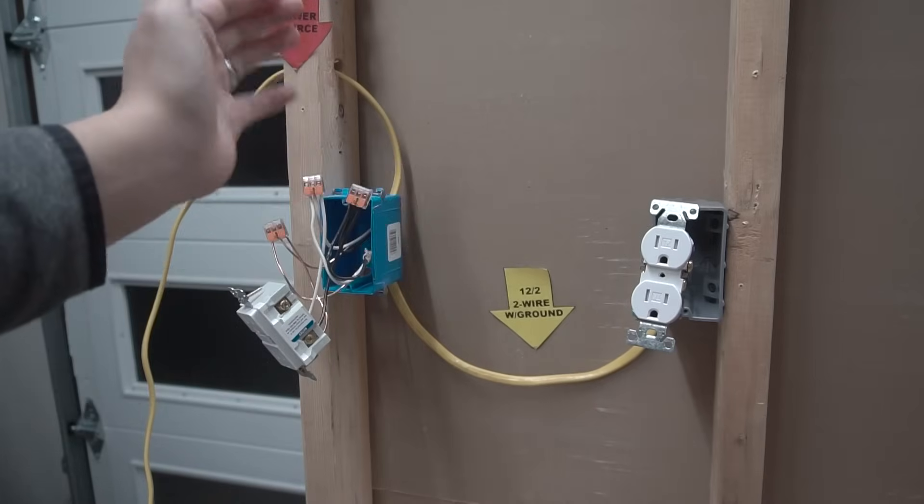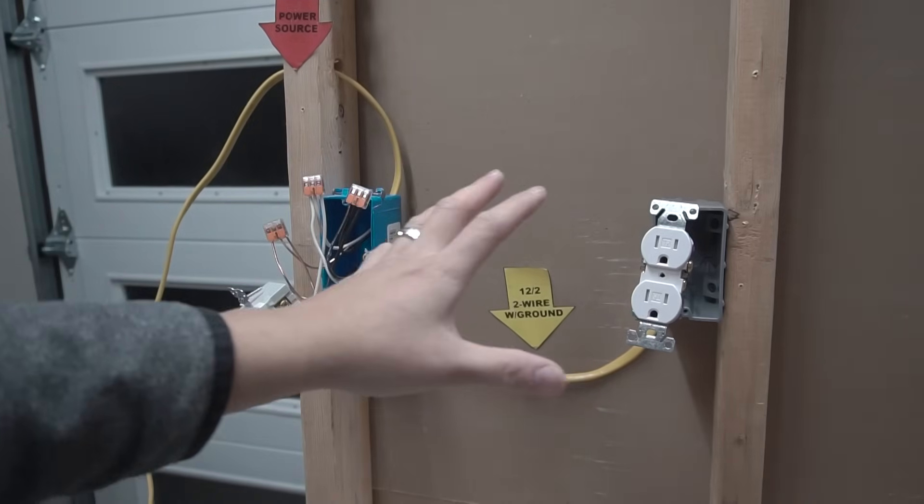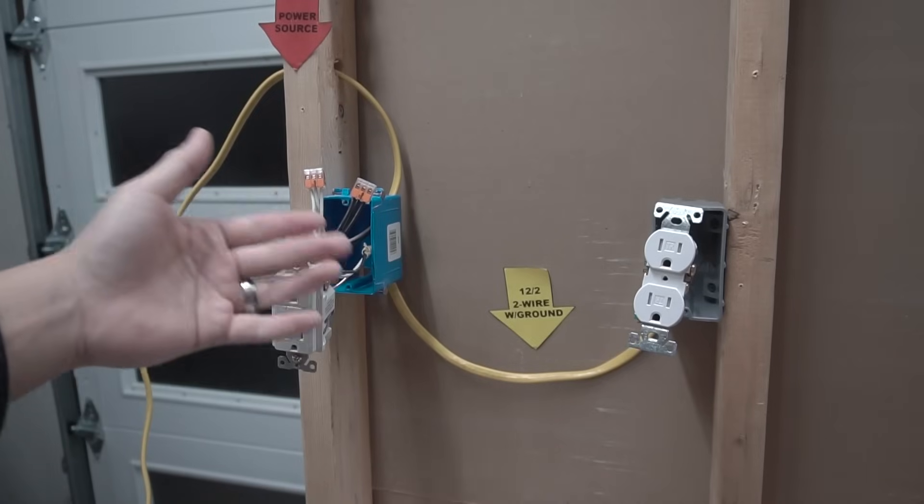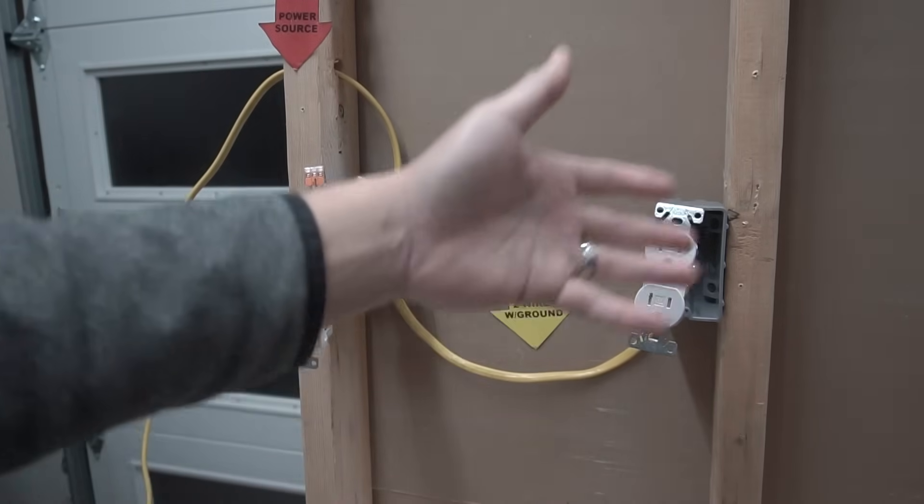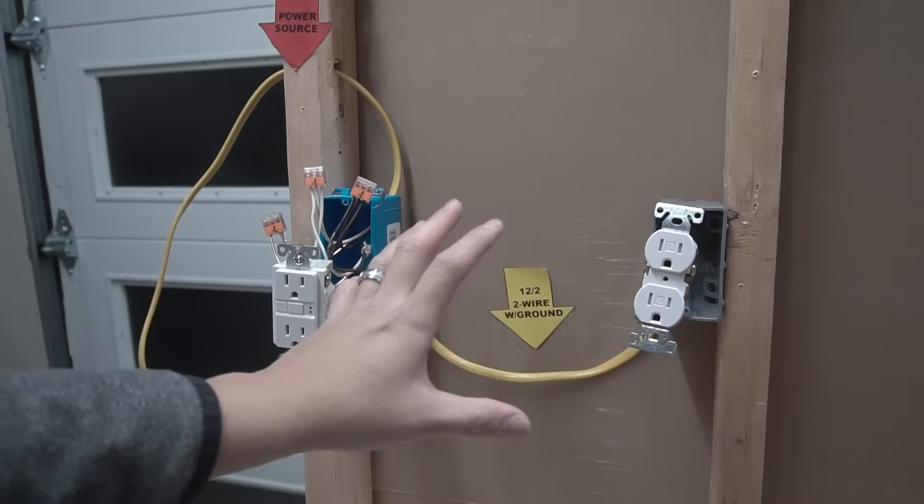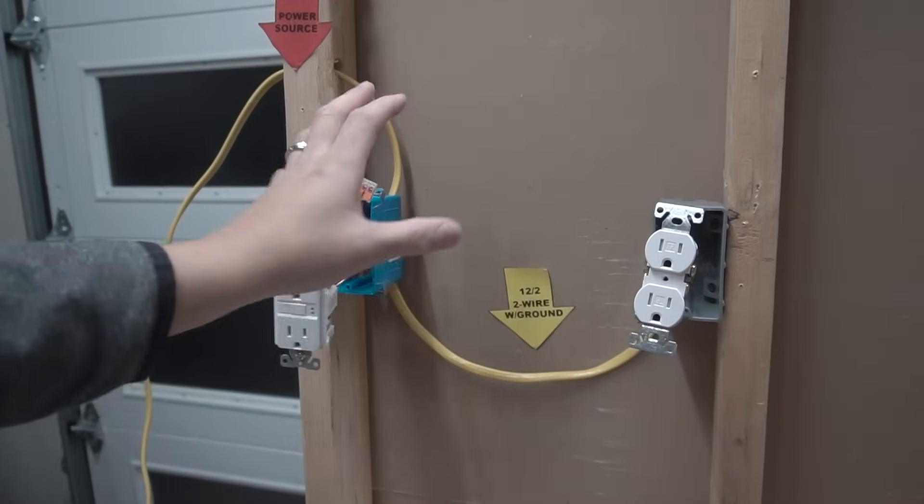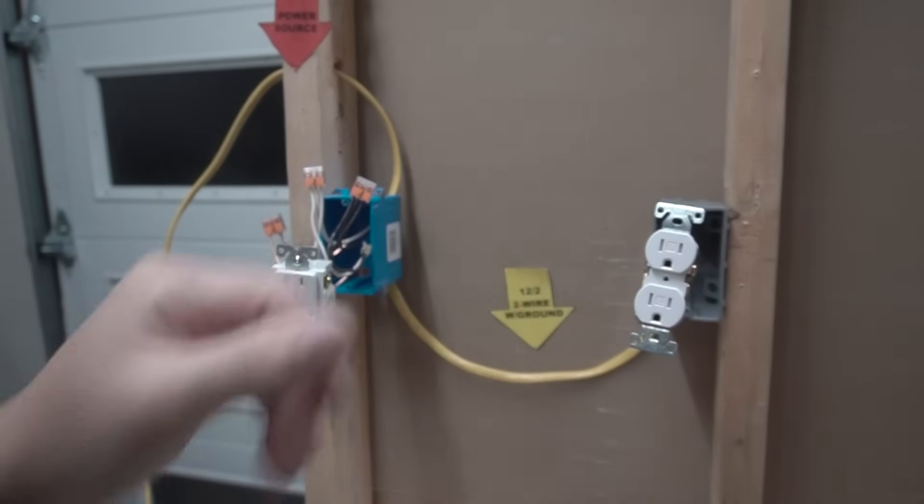This receptacle right here is still powered on. On this channel, I like to do multiple and different types of wiring. An example of this is probably if you're in a bathroom, you have one on the sink, and this one is located elsewhere that is not protected, that is not close to any six feet of a wet area, okay, like a sink.